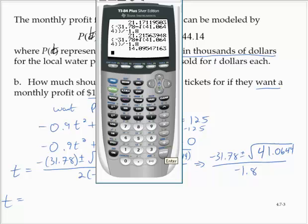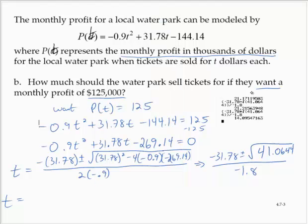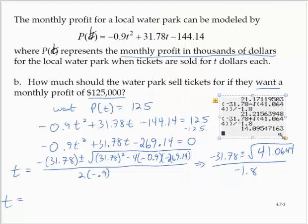Alright, there we go. So we have t ≈ 14.10, and t ≈ 21.22.